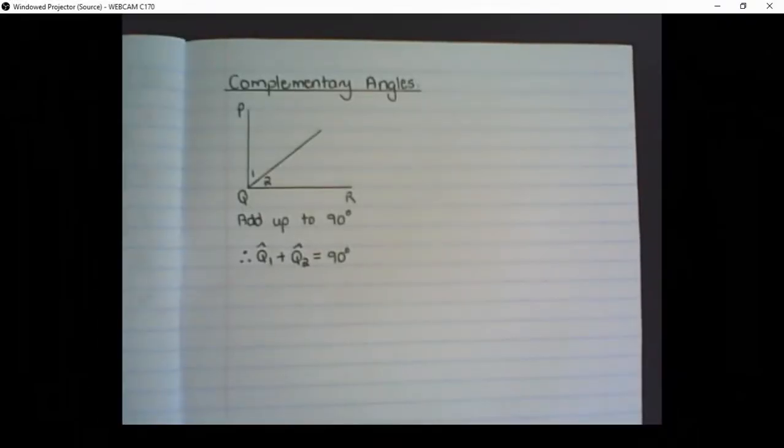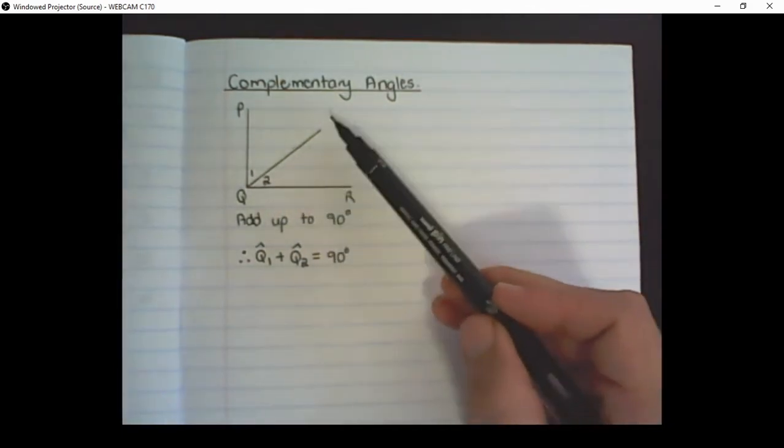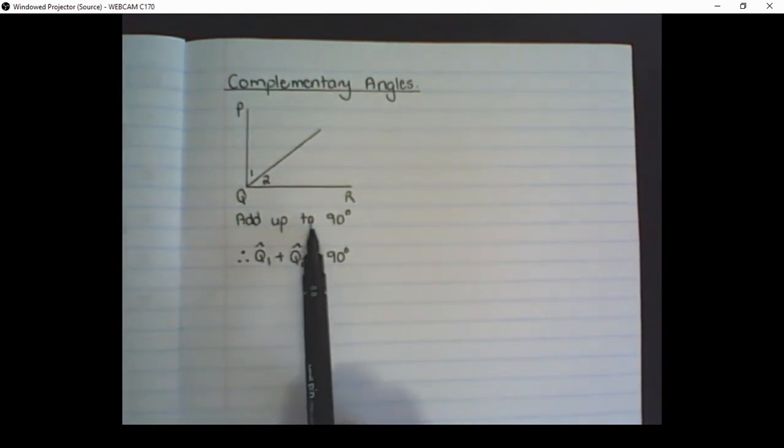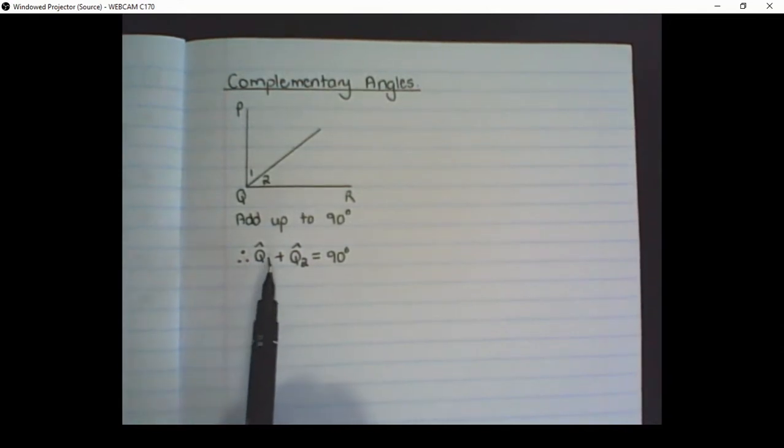We also get definitions within angles. So if I form a right angle and I split it up, then these two angles are called complementary angles, meaning they add up to 90 degrees. So for example, Q1 plus Q2 would be equal to 90 degrees.